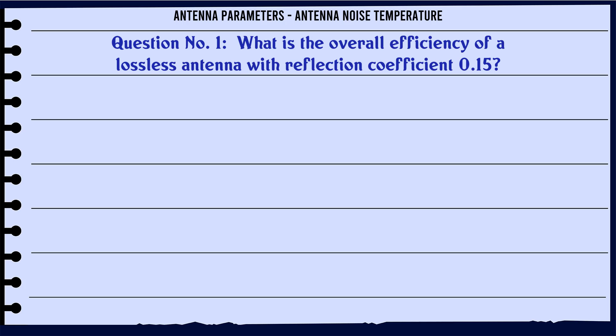What is the overall efficiency of a lossless antenna with reflection coefficient 0.15? Option A: 0.997. Option B: 0.779. Option C: 0.669. Option D: 0.977. The correct answer is 0.977.